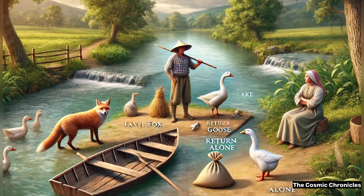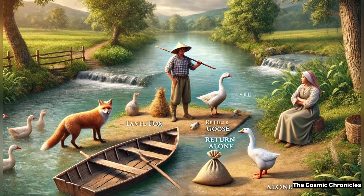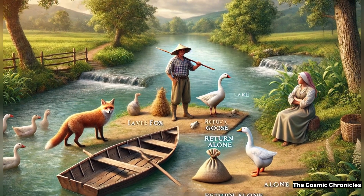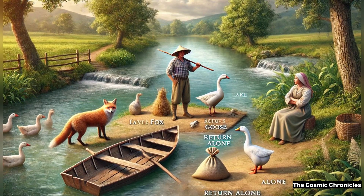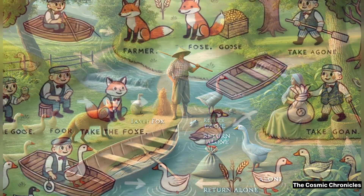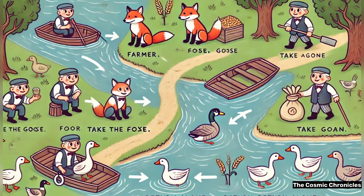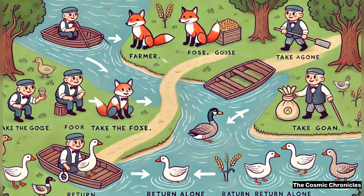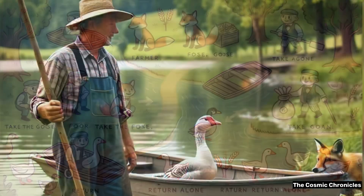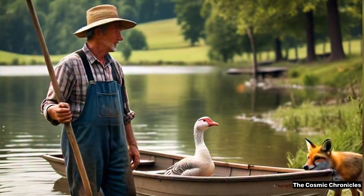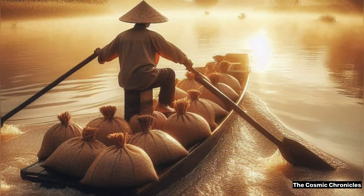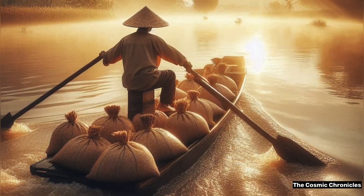The boat can only carry the farmer and one of the three items at a time. The challenge is to ensure that none of the items are left together in a way that one might harm the other — the fox would eat the goose, and the goose would eat the grain.